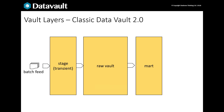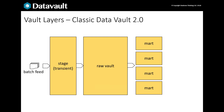The raw vault holds all the data, but consumers want access to a subset of this for their own purposes. They may want the data in a particular format, or tuned for certain types of query, and there are data privacy and security concerns. A mart layer is used to extract a subset of the raw vault to meet the needs of end users and our data policies. There isn't just one mart — data in the raw vault can be used by many different groups across the organisation, so we create a separate mart for each distinct group. As data comes from one source — the raw vault — it will reconcile no matter which mart you take it from.